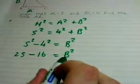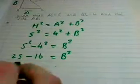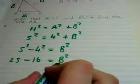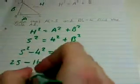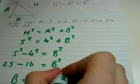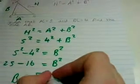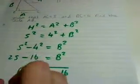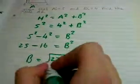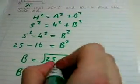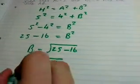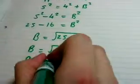Now you square root both sides of the equation to get B. B equals the square root of 25 minus 16. B equals the square root of 9. Therefore, B equals 3.